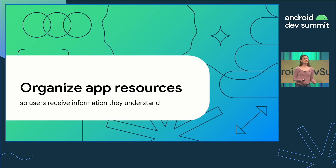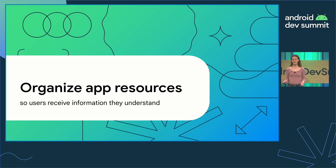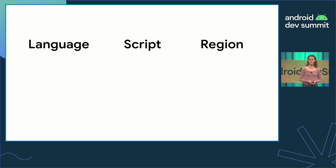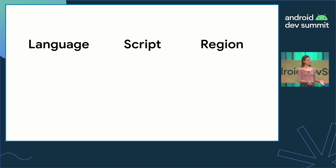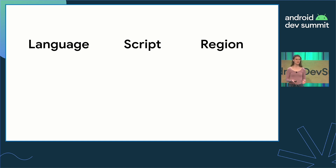Our first tip is to organize your app resources so users receive information they understand, and the key point here is to be mindful of scripts. Basics first: language, script, and region. Language is what we use to communicate and be understood by others. Script is our writing system, and region is a place.